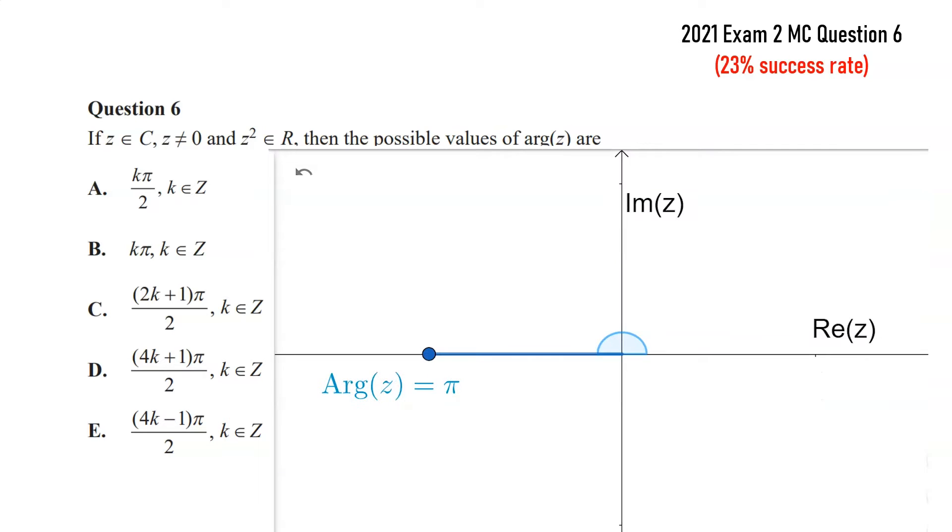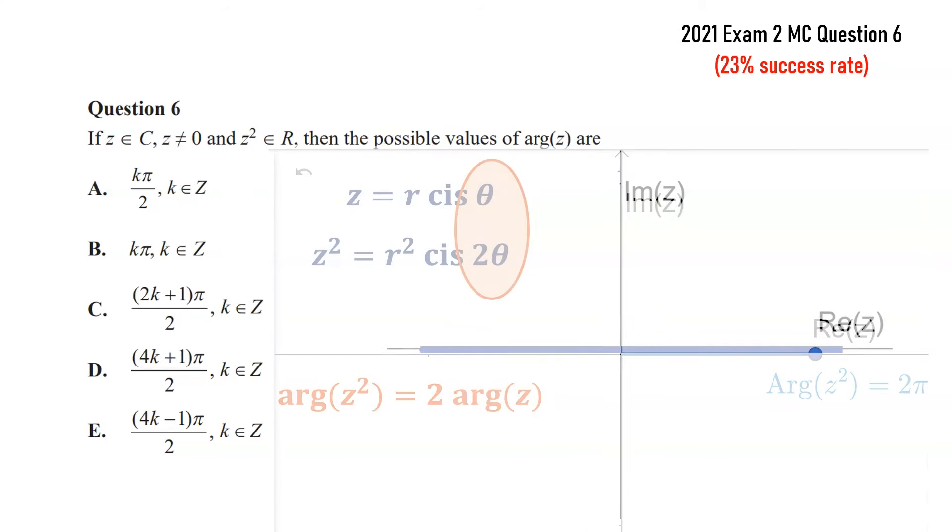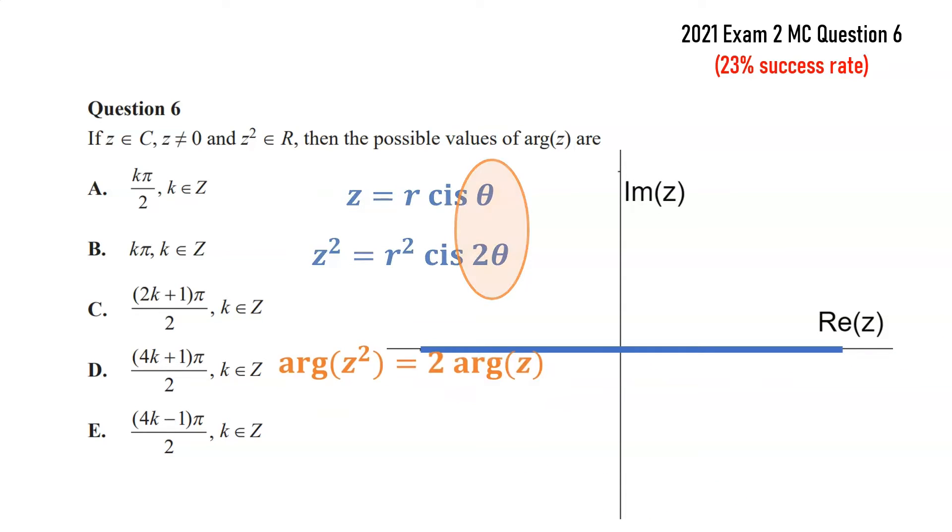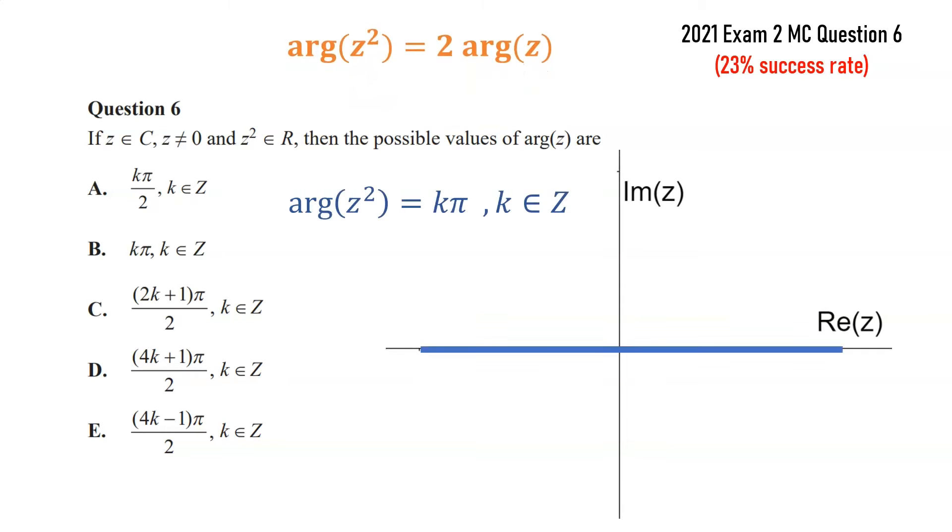But that's not the only thing that could happen. For example, if the original argument was π, when we double it, we get 2π, and that was also on the real axis. So we need to think about what are all the possible situations. Probably it's useful to do this algebraically. So if we start with what we know, which is that the argument of z² has got to be a multiple of π, to be on the real axis, it must be a multiple of π, because it's non-zero.